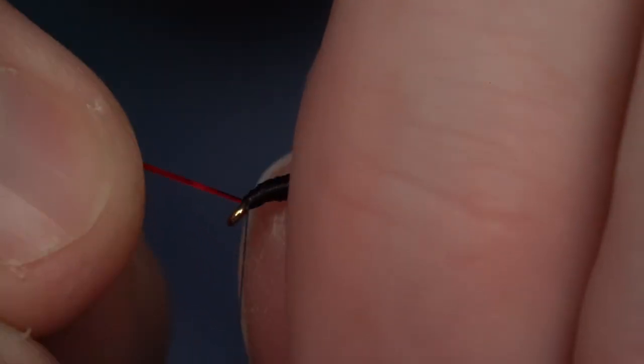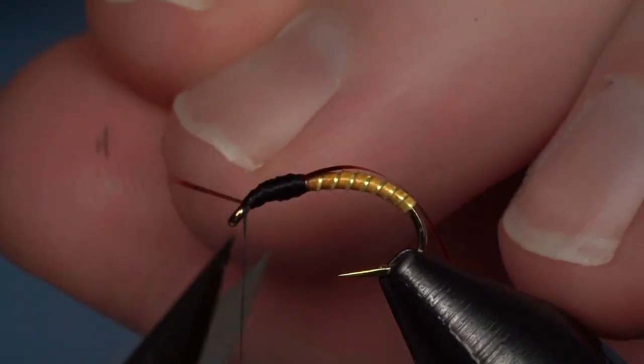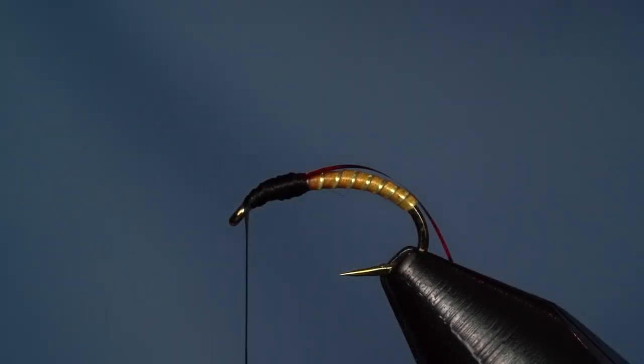Pull the Flashabou forward and capture it right behind the eye. A couple of wraps to make sure it's positioned where I want it. Then clip out our extra and do the same on the other side.